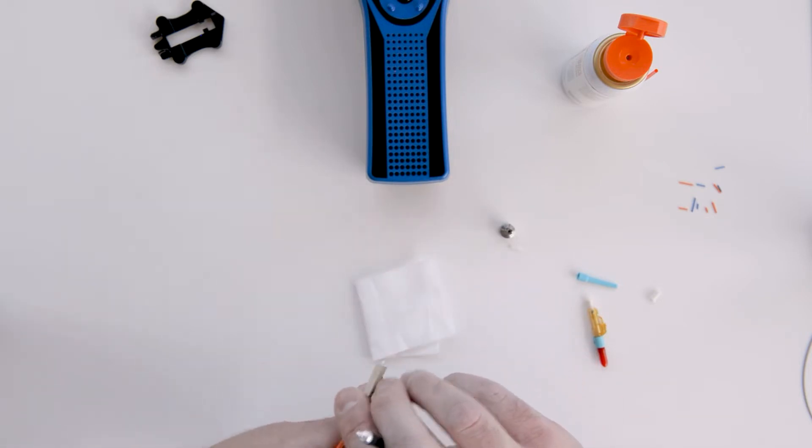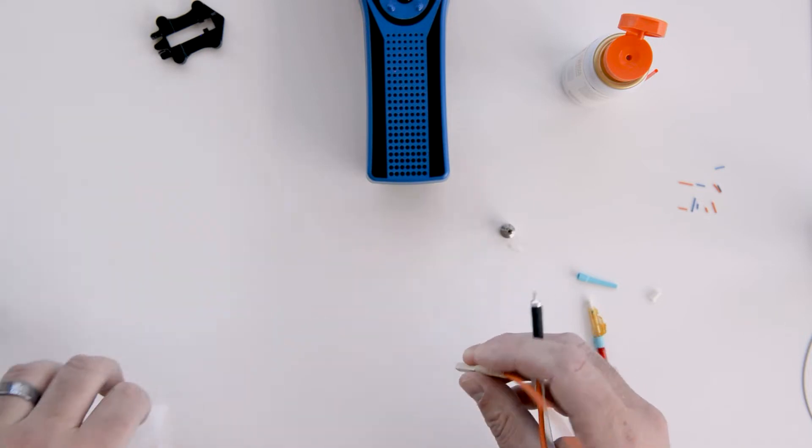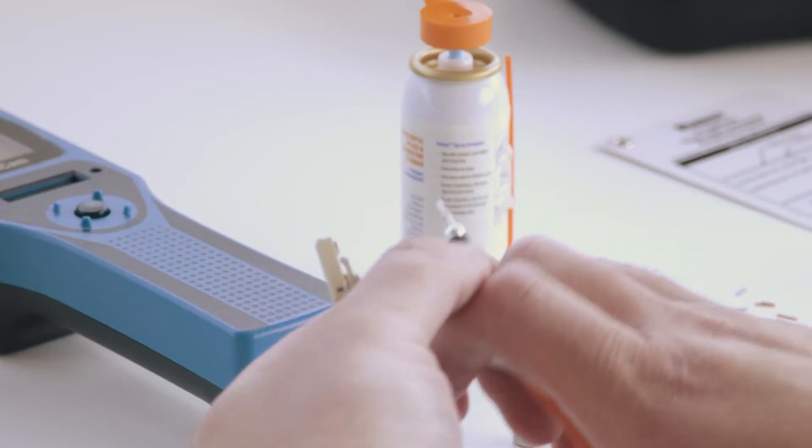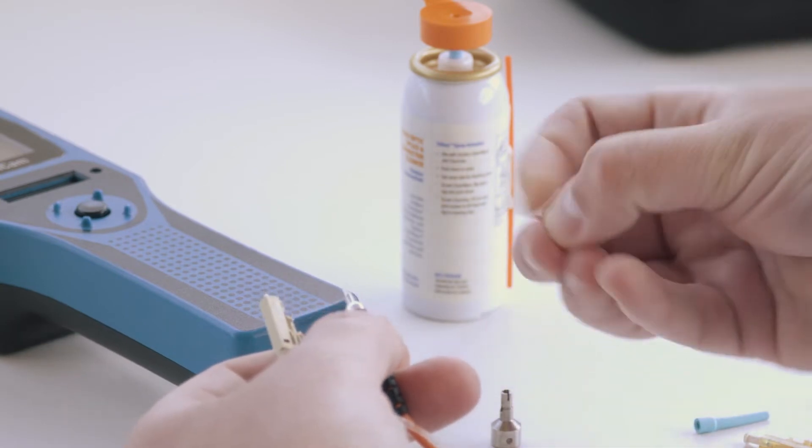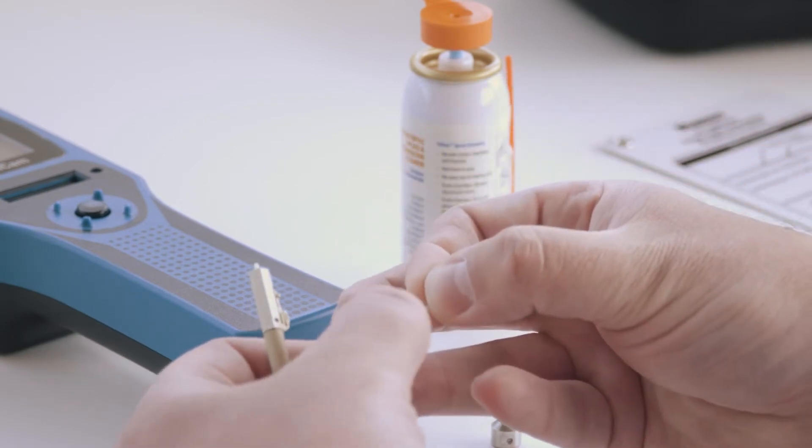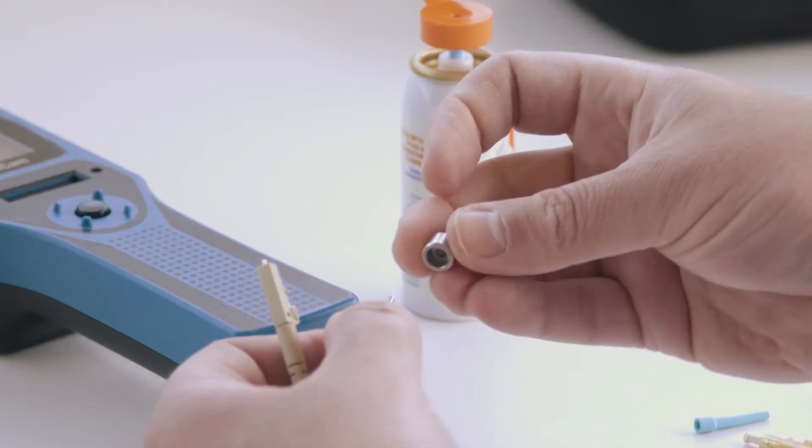Remove the dust cap from the connector on the other end and clean this ferrule as well. Pre-saturated cleaning wipes are not recommended for this process. Replace the alignment sleeve, checking to make sure it is not cracked or chipped. Finally, replace the adapter, making sure it's hand tight.